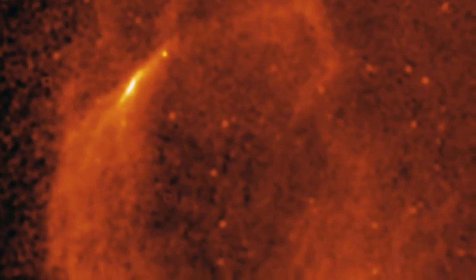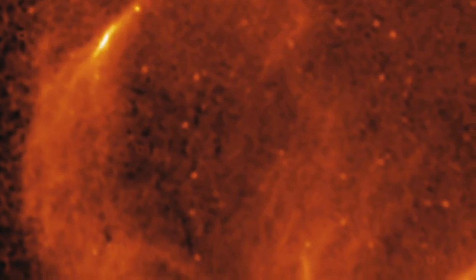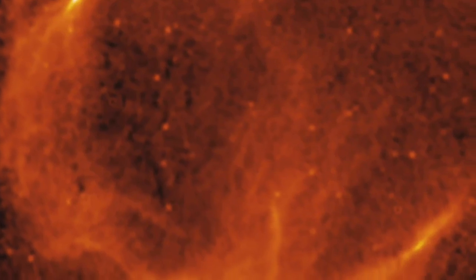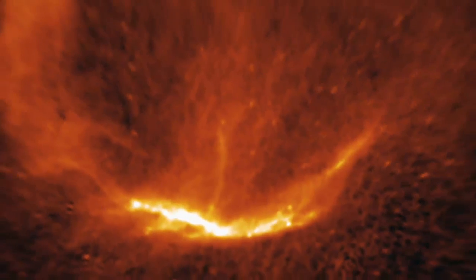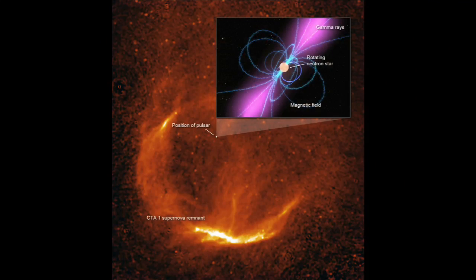In fact, Fermi has already found one. It lurks in this expanding shell of gas, shown here at radio wavelengths, formed when a star exploded about 10,000 years ago. The shell is a supernova remnant called CTA-1.